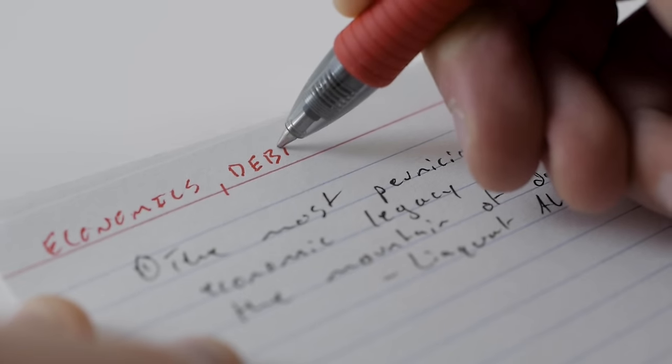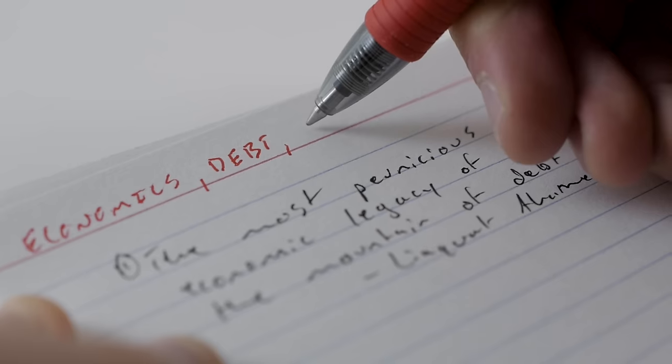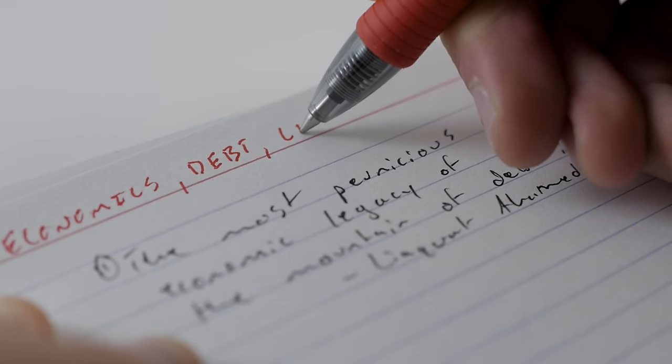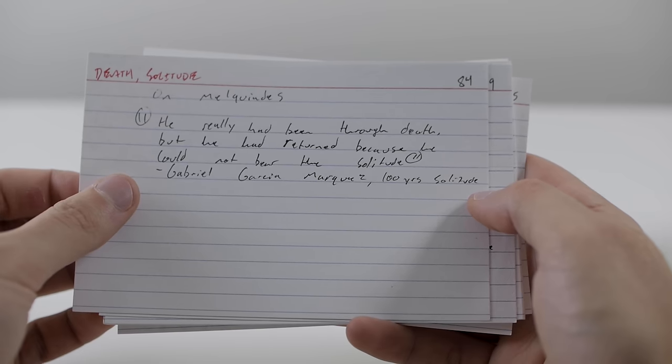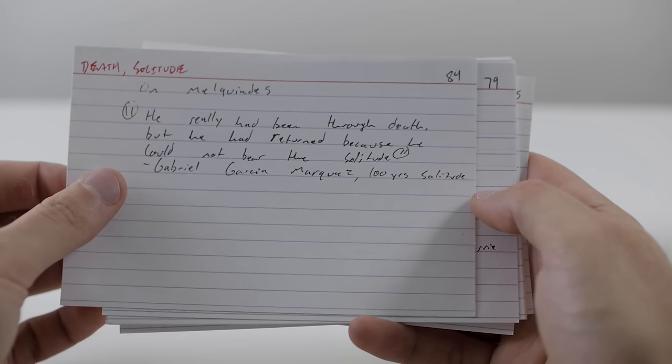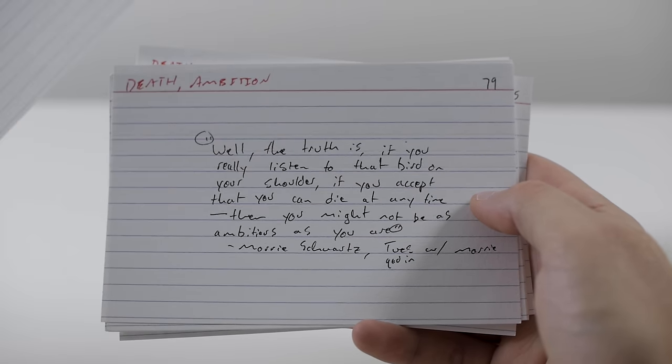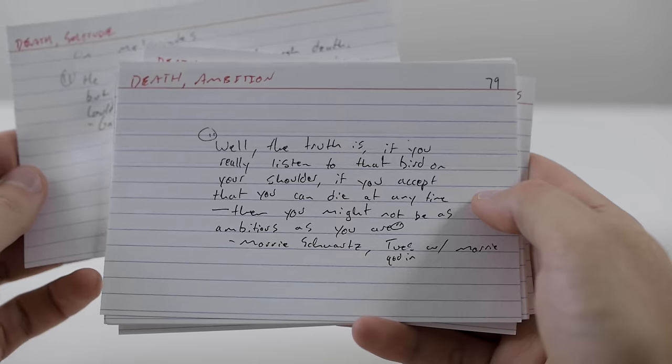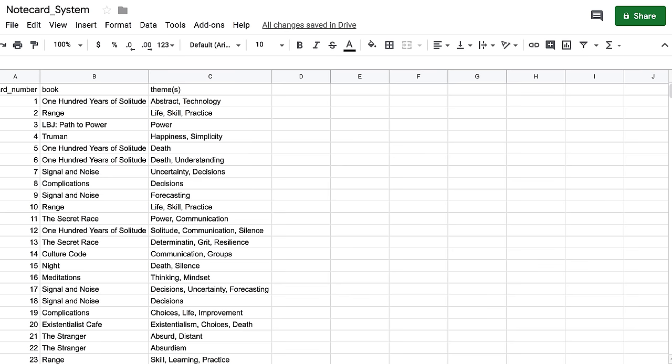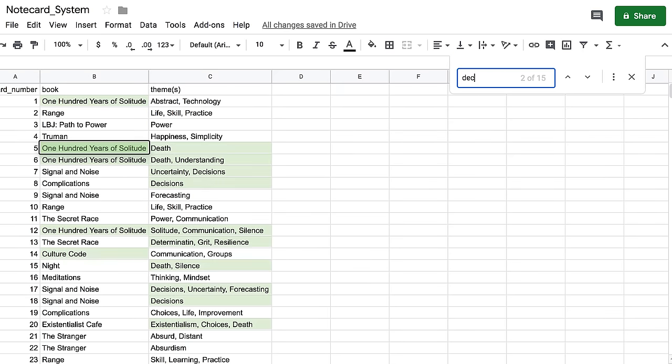That being said, I do think that technology can integrate nicely with the system. Many of the note cards that I have have several different themes, and they're all listed at the top. I organize them by the first theme listed, but this doesn't really allow me to reference every single theme a card might have. But I've started numbering my cards, and I can use a spreadsheet to list each theme on every single card. This would help me search for cards that might reference both uncertainty and decisions, for instance.